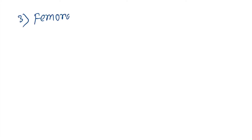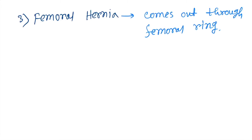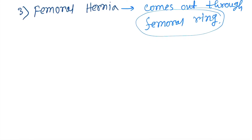Next is the femoral hernia, where the organ or tissue comes out through the femoral ring. Learn the femoral ring in detail in the anatomy.